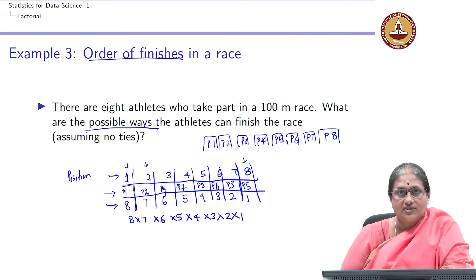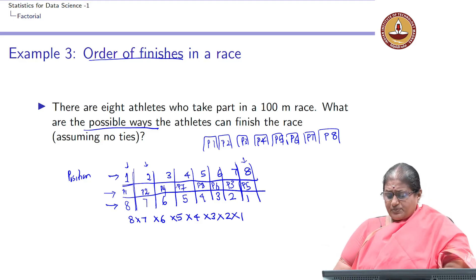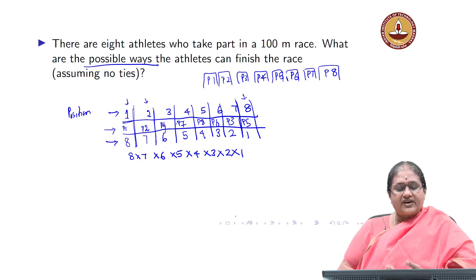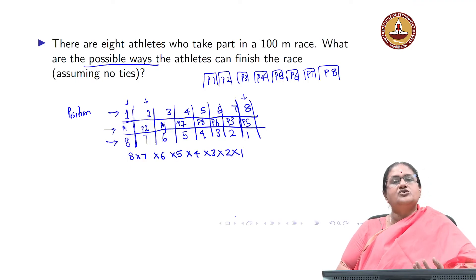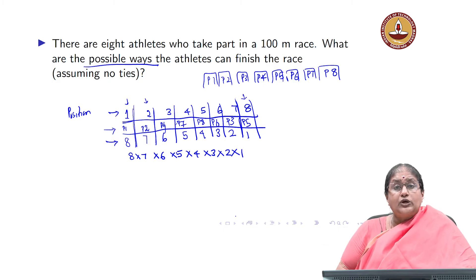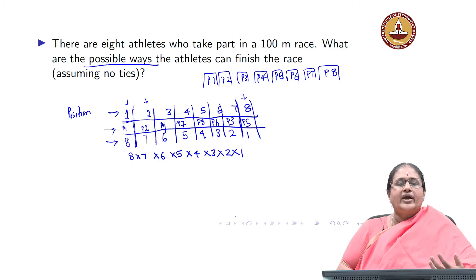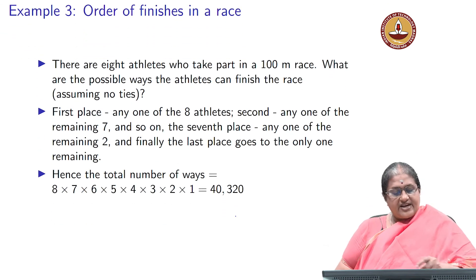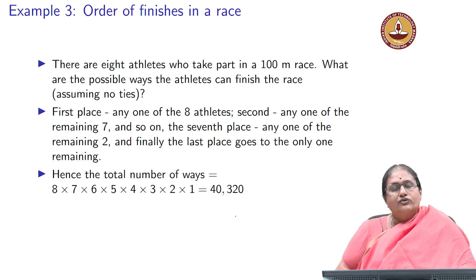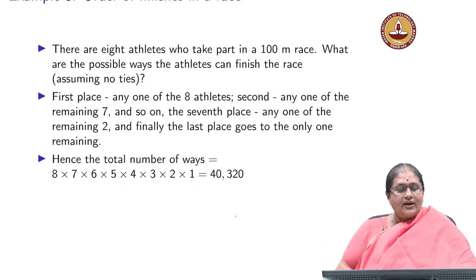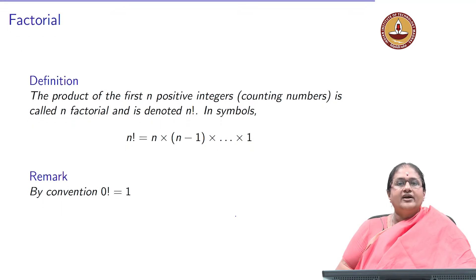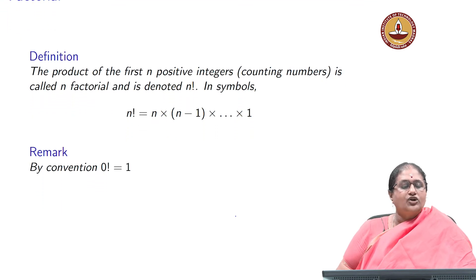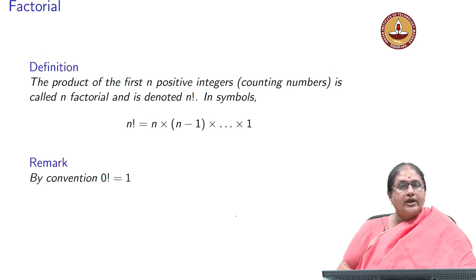This is a large number. Instead of writing it as 8 × 7 × 6 × 5 × 4 × 3 × 2 × 1, can I have a simpler way to express this number? What is the simpler way to express this number which is 8 × 7 × 6 × 5 × 4 × 3 × 2 × 1? This is where I define a notation referred to as factorial notation.